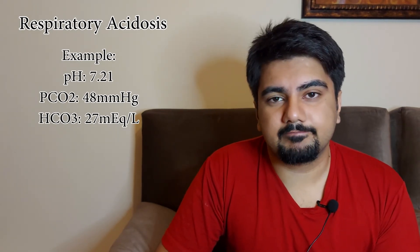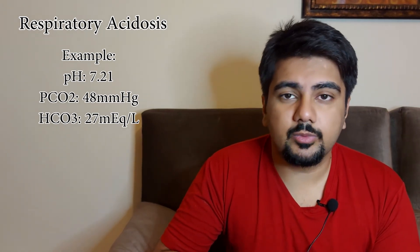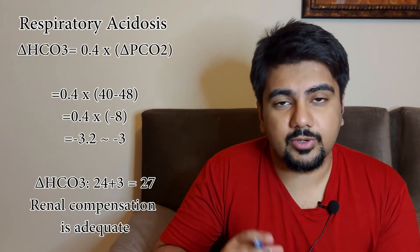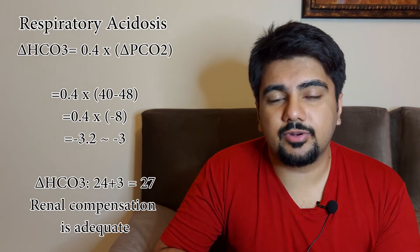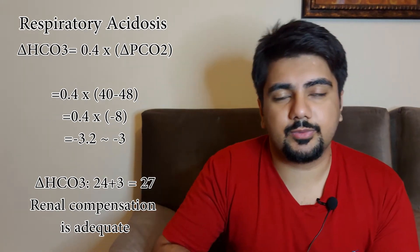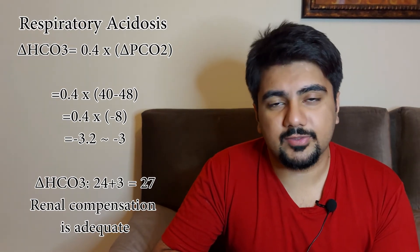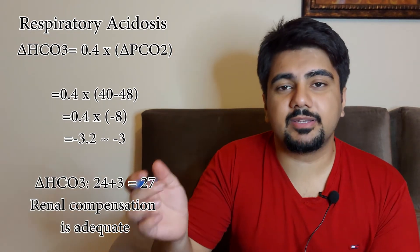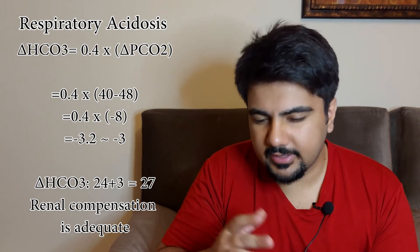Let's take the same example: a patient has a pH of 7.21, a pCO2 of 48, and a bicarb of 27. We need to understand whether or not there is compensation going on by the renal system. We're going to use the equation: delta bicarb = pCO2 × 0.4. The coefficient here is 0.4. Throwing in the normal values and the patient's pCO2, it becomes 0.4 × (40 − 48), which comes to around −3.